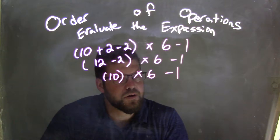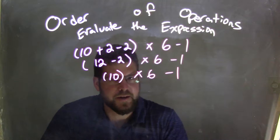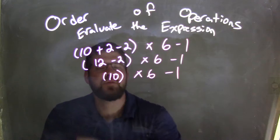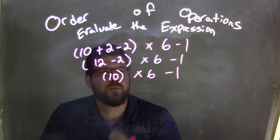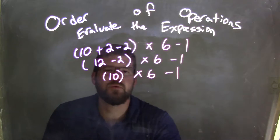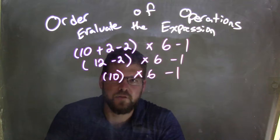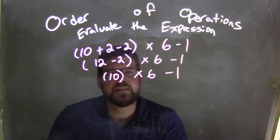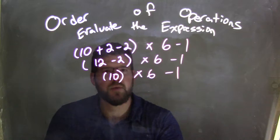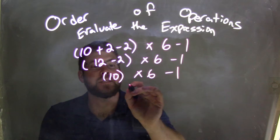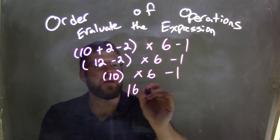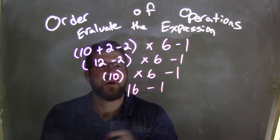Now here is where it becomes tricky. 10 times 6 comes first. Multiplication comes before subtraction. So 10 times 6 comes out to be...